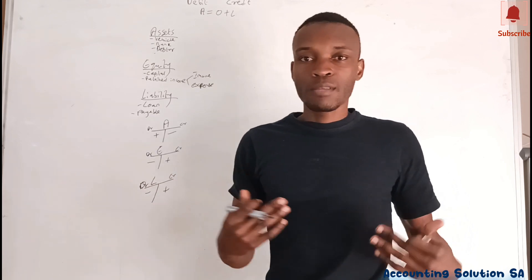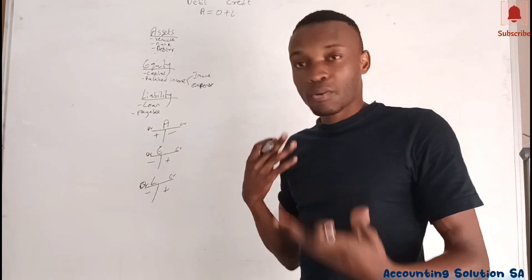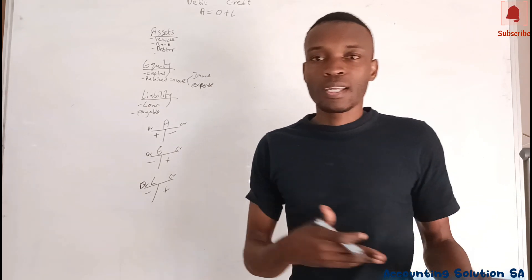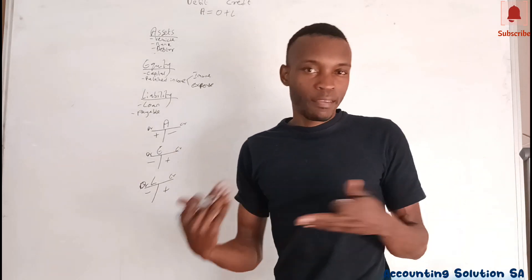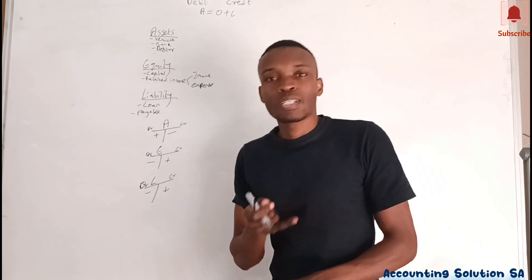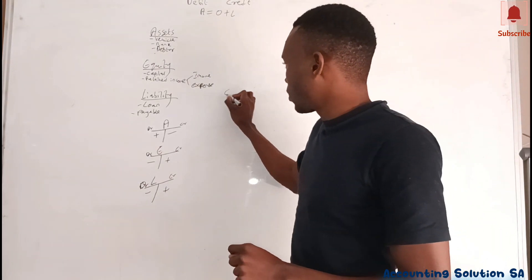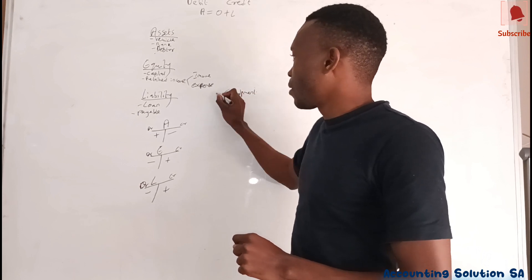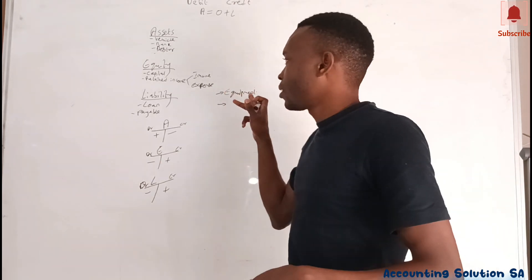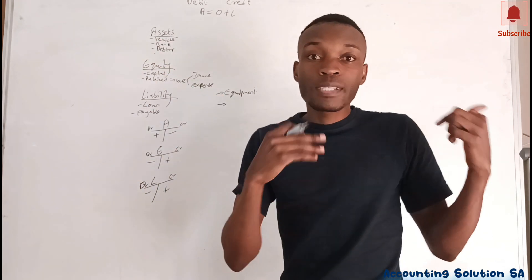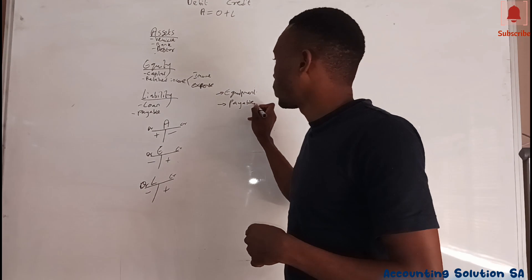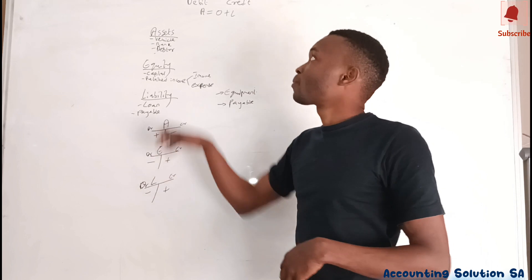Now let's go to an example of how to apply these rules. Let's say a company purchases equipment on credit for 500. First, you must identify two components from that transaction: number one, what did the company purchase — equipment; and number two, how did the company purchase it — on credit, which means it is a payable. So we have equipment and payables, each for 500.